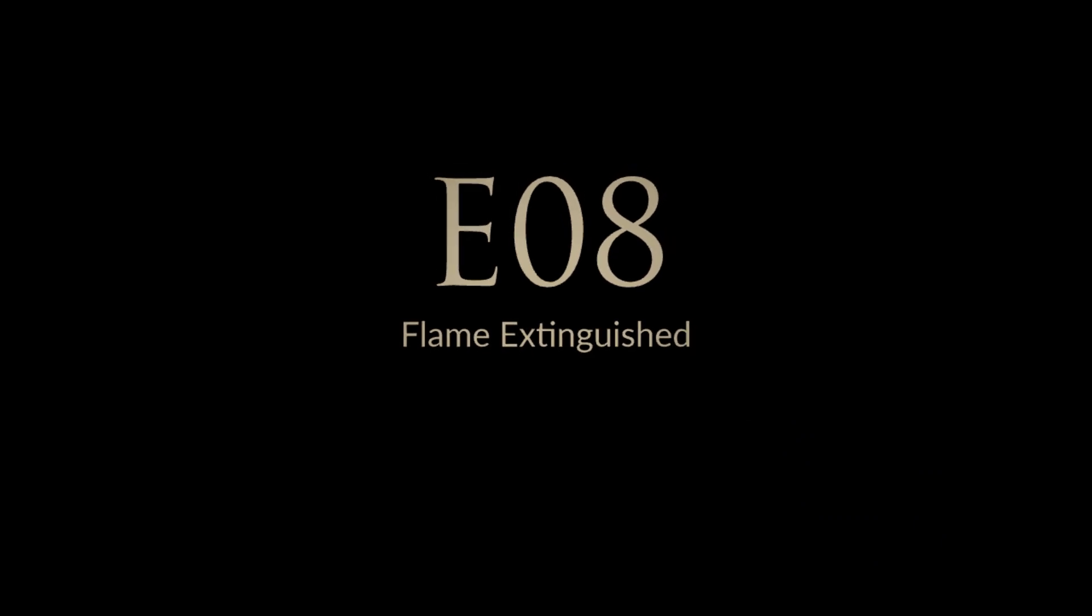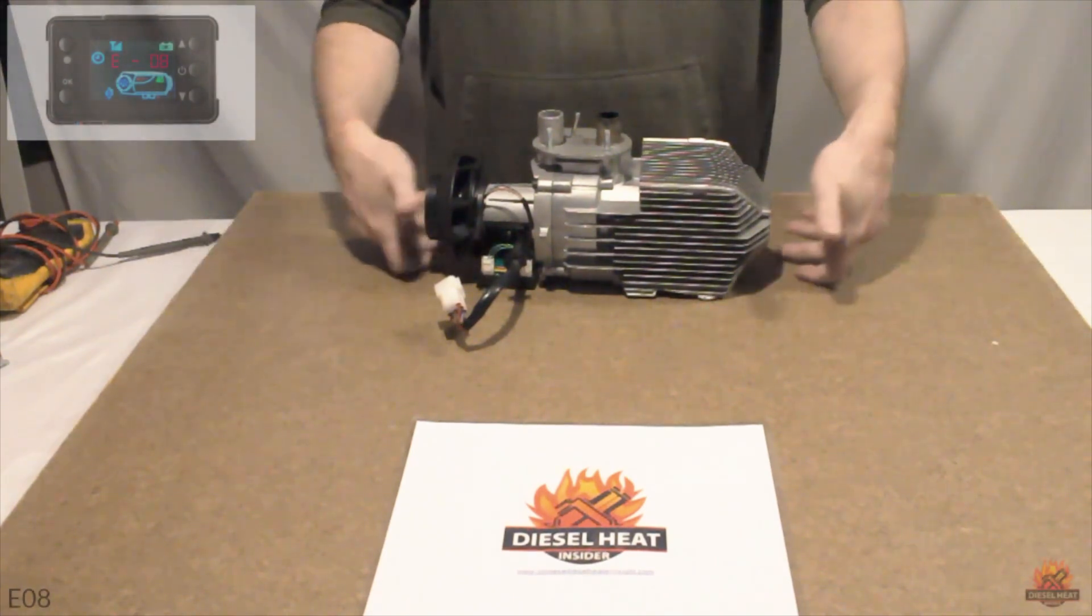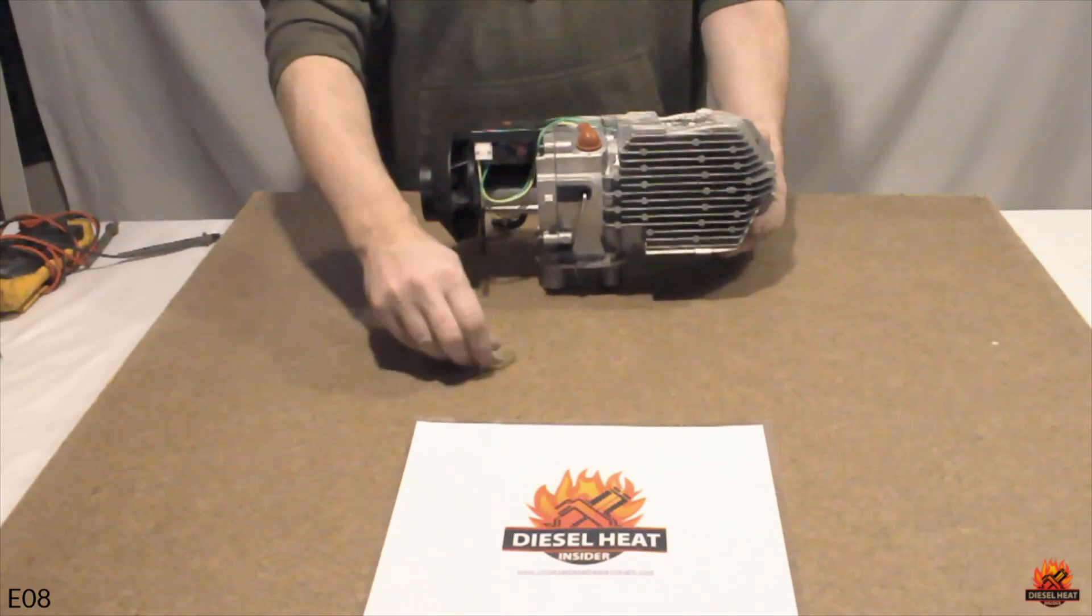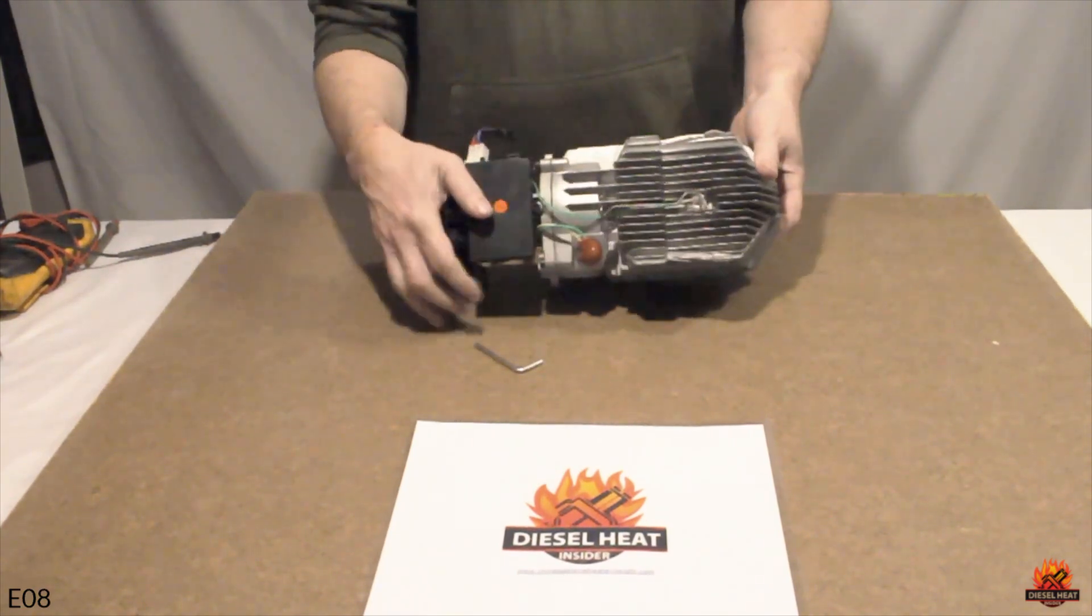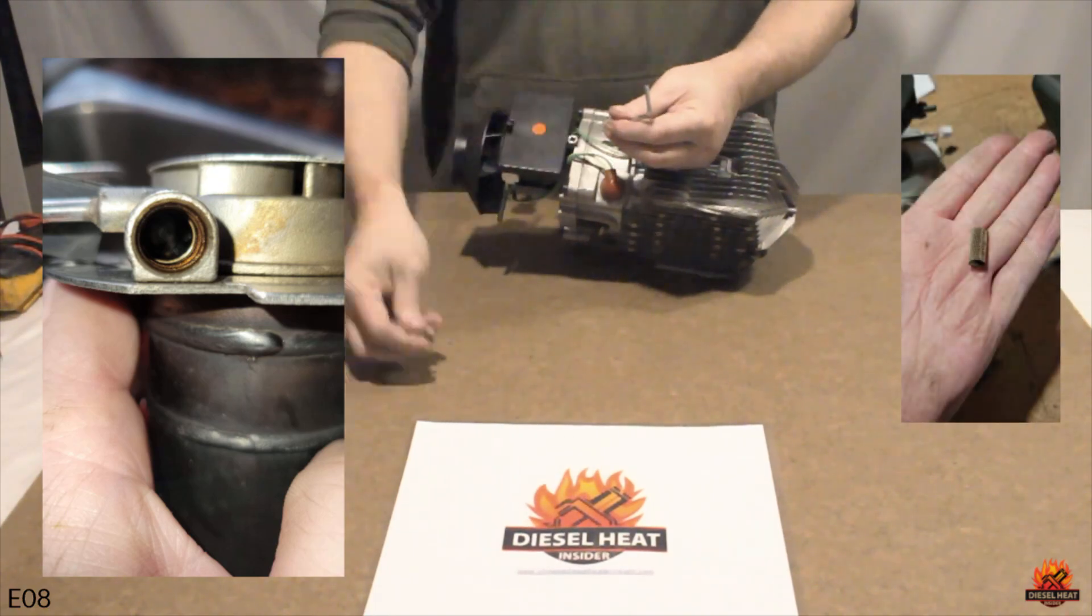Error code 8, flame extinguished. Demystifying the E8 error code on Chinese diesel heaters. Clearing the smoke around common misconceptions. We had an E8 error code and quickly discovered our unit, upon tear down, was missing the metal mesh atomizer around the glow plug.